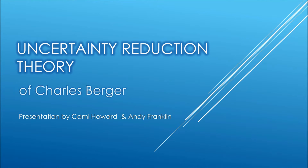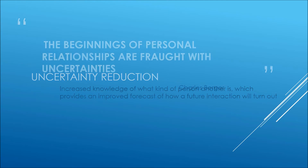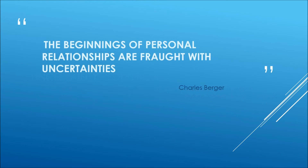Uncertainty Reduction Theory of Charles Berger. Presentation by Kimmy Howard and Andy Franklin. Uncertainty reduction can be defined as increased knowledge of what kind of person another is, which provides an improved forecast of how a future interaction will turn out. A direct quote from Charles Berger: 'The beginnings of personal relationships are fraught with uncertainties.'